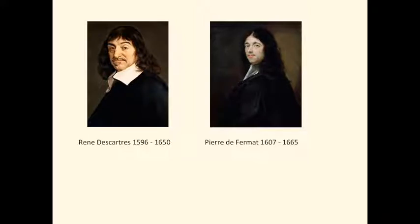Coordinate geometry, probably known as analytical geometry, was developed in the 1630s by René Descartes and also Pierre de Fermat. They seem to have discovered coordinate geometry independently, and it was a combination of algebra and geometry because they both realized that a line or curve on a graph could be represented by an equation and vice versa.